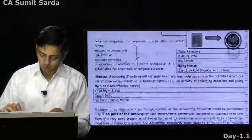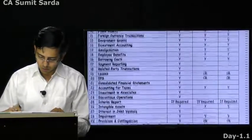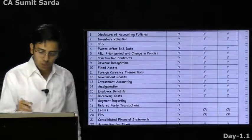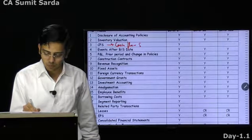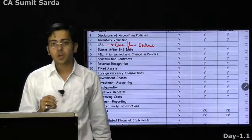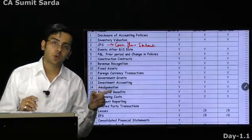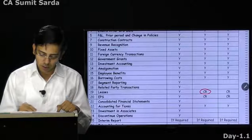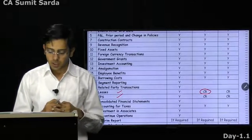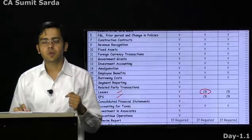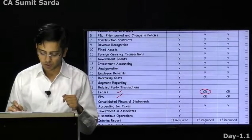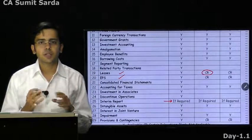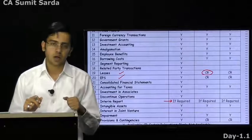If you open the notes, we have a complete list showing which standards are applicable to whom. CFS — cash flow statement — is not required to be presented by Level 2 and Level 3; only Level 1 is required to present it. CR means certain relaxations given in the case of leases and earnings per share. Under leases, finance lease is not required to be presented by Level 2 and Level 3 enterprises. Level 1 doesn't have any such exemptions.